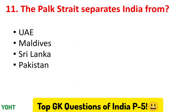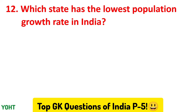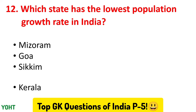Let us see the twelfth question. Which state has the lowest population growth rate in India? The options are Mizoram, Goa, Sikkim, and Kerala. The correct answer to this question is option number four, Kerala.